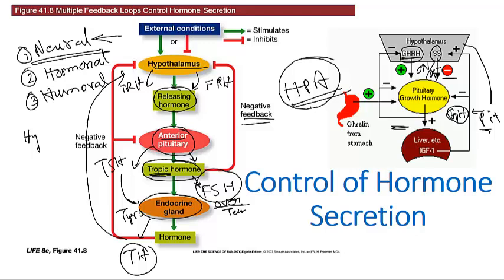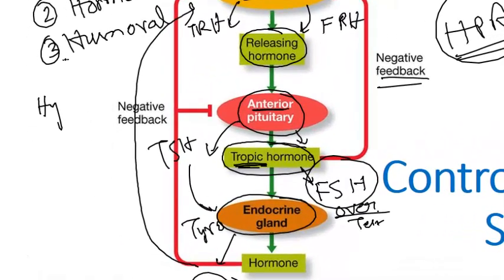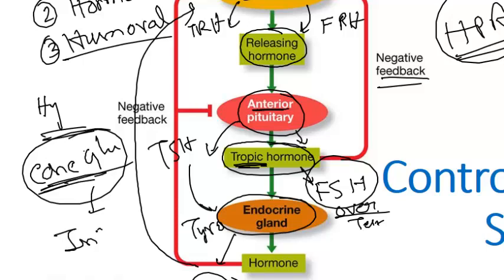The third kind is the humoral mode of regulation. The humoral mode occurs when substances other than hormones control the secretion of the endocrine glands. For example, insulin secretion by the pancreas is determined by multiple factors — not only by the concentration of insulin itself, but also by the rise in blood glucose after a meal, the rise in amino acids after a meal, and by hormonal and neural stimuli. The concentration of glucose plays a vital role in regulating insulin secretion.